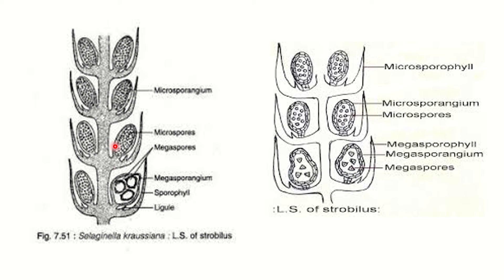It is a bilayered structure. In the young sporangium, inside the wall is a mass of sporogenous cells, which in due course of development separate into microspore mother cells, and later by meiotic divisions produce numerous haploid tetrads of microspores, which at maturity separate from each other. At maturity, the tapetal cells and the inner wall of the microsporangium disorganize, leaving the wall single-layered.